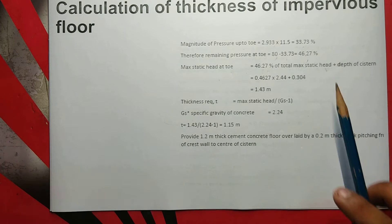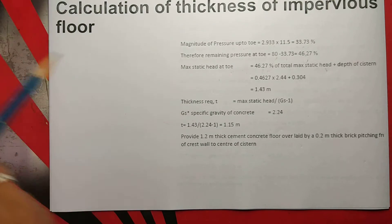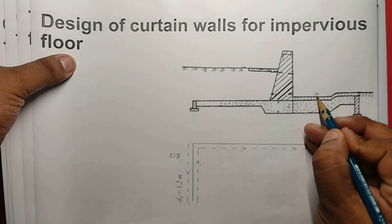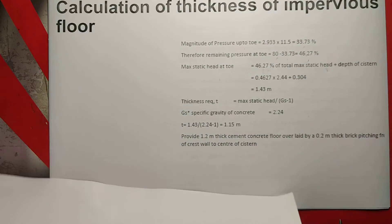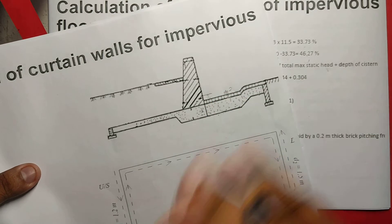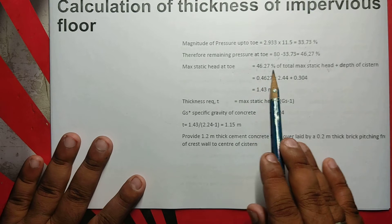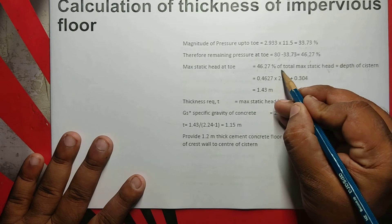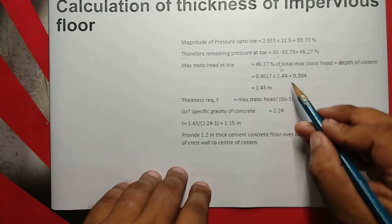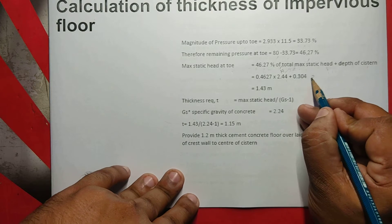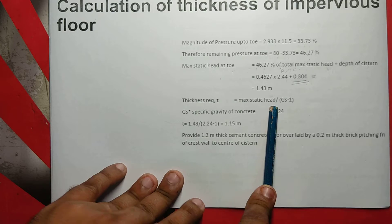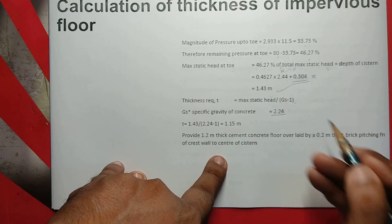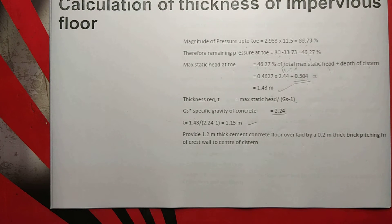The total maximum static height, plus depth of system. We want to add depth of system. The value is 2.44 as small d, plus xn, where xn is 0.304, which is equal to 1.43m. Maximum static head is 1.43. Therefore thickness required equals maximum static head divided by gs minus 1, where gs is specific gravity of concrete, which is equal to 1.15m thickness.